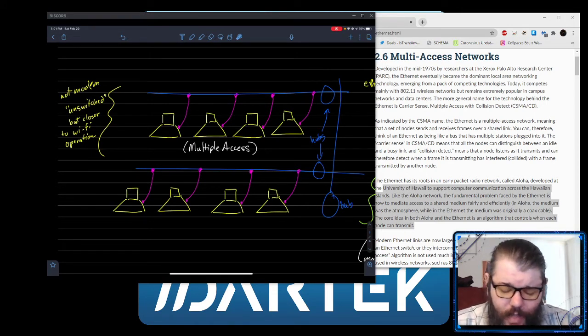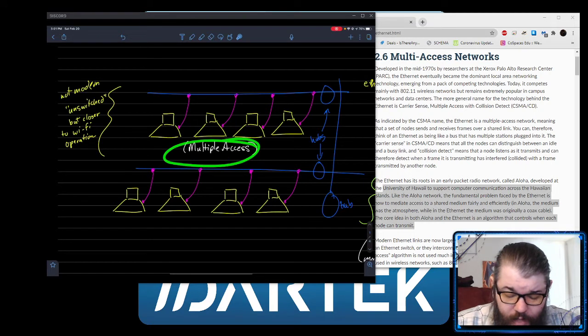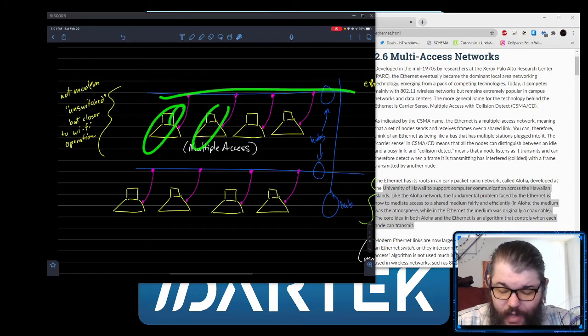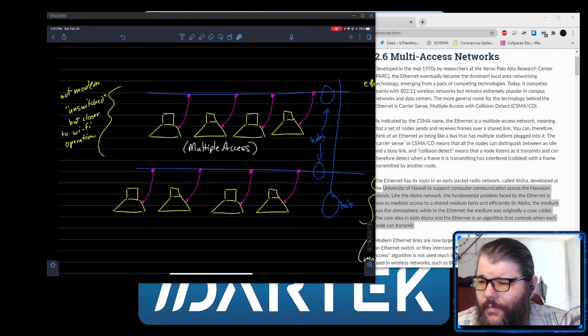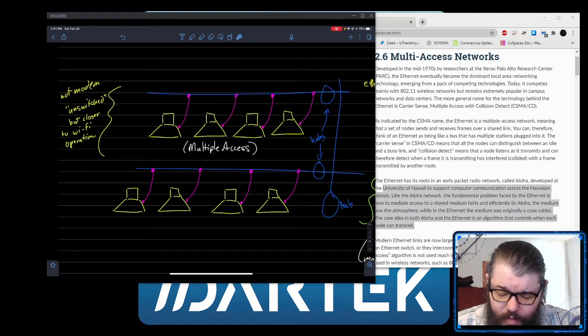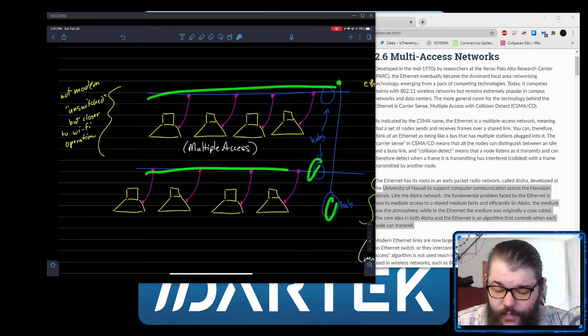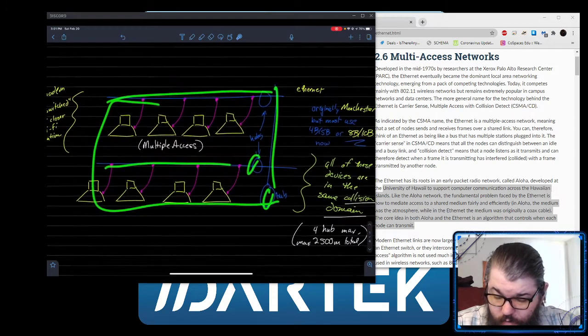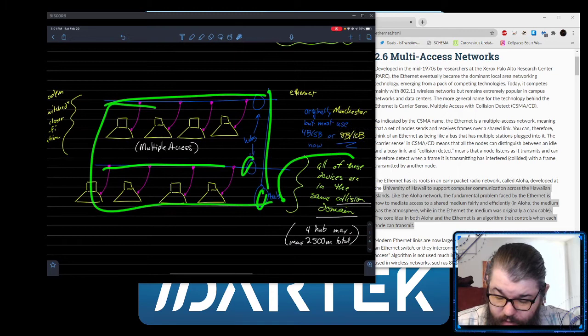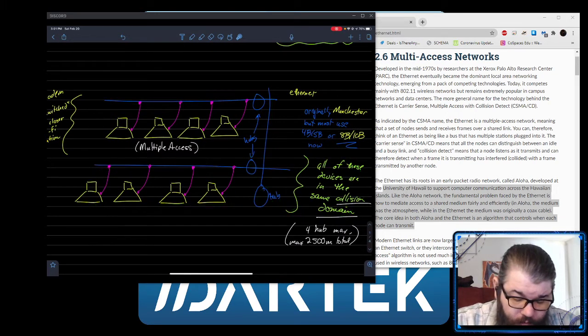This is what we mean by multiple access. All of these machines can access this same line, and this has a lot of consequences. The entire network, everything that's connected via these hubs, is inside what's called the same collision domain.